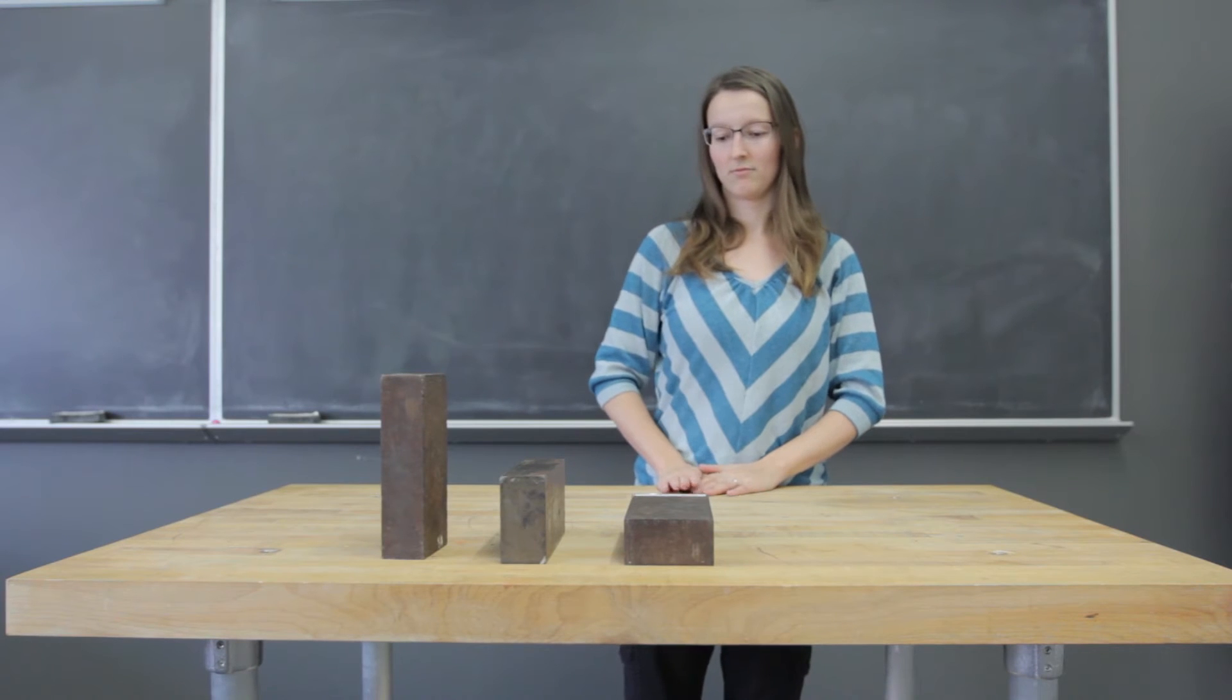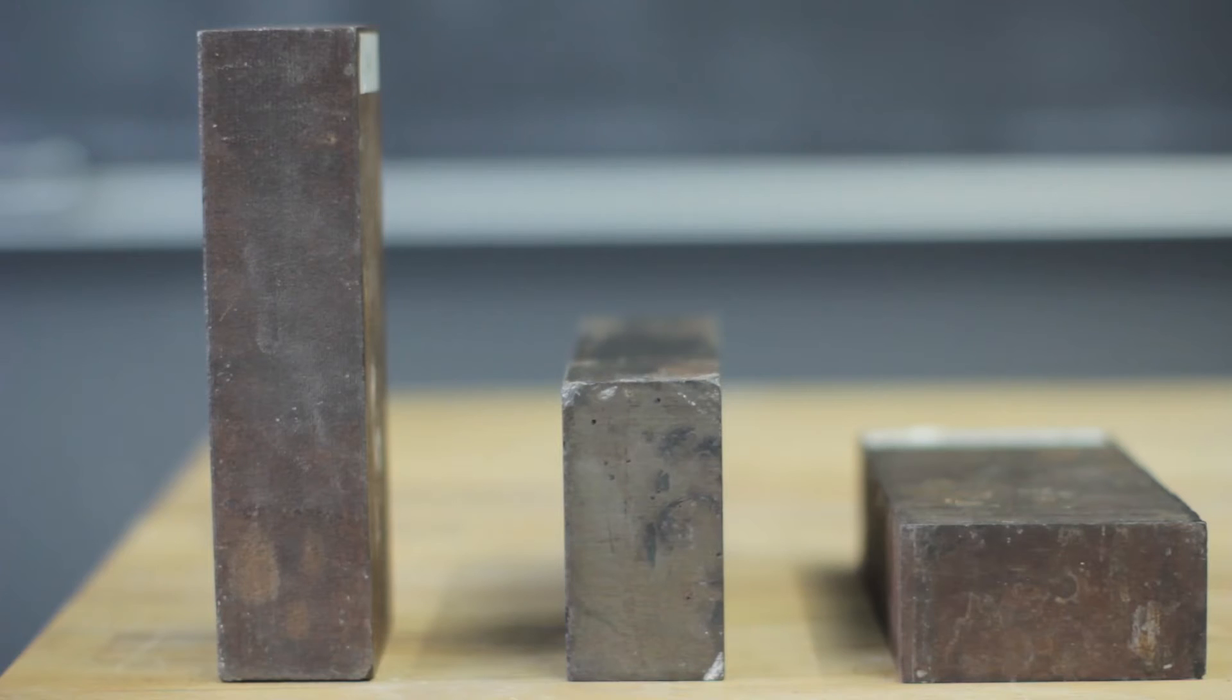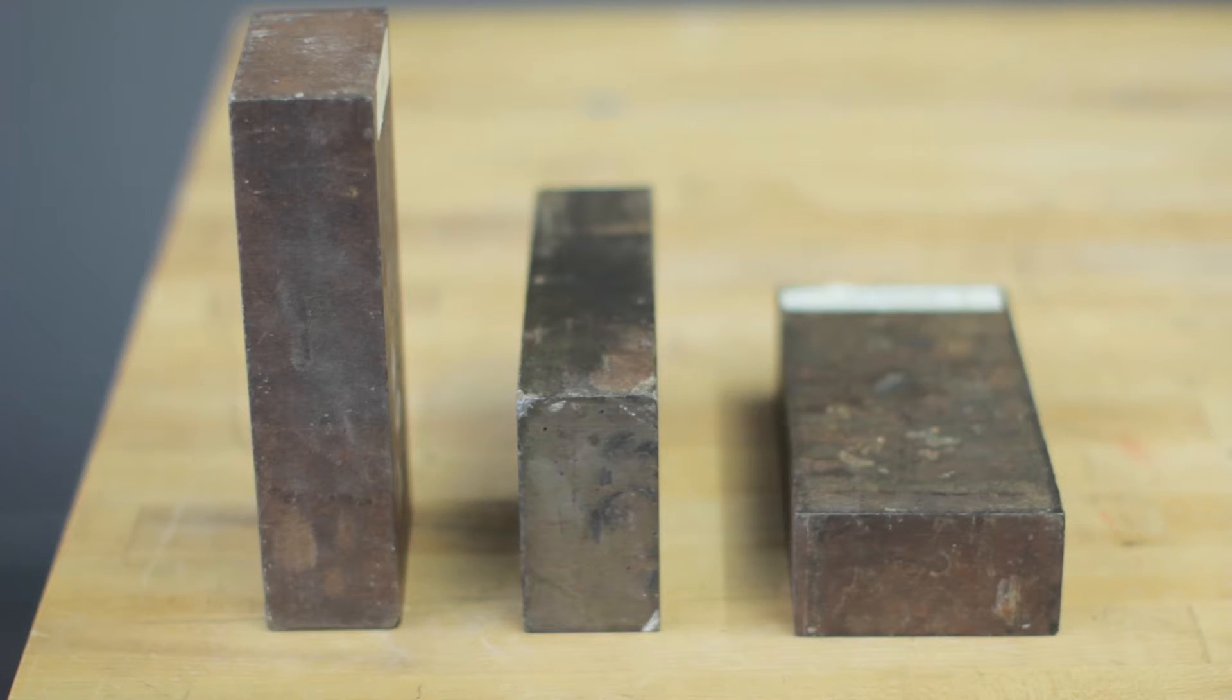For example, the following brick placed on the tabletop creates pressure on the tabletop as a function of the weight of the brick. The mass of the brick times the acceleration of gravity creates the force of weight. That force F is distributed over the surface area A of the brick,